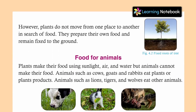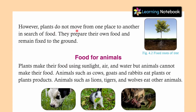However, plants do not move from one place to another in search of food. They prepare their own food and remain fixed to the ground. जो plants होते हैं वो एक जगह से दूसरी जगह move नहीं करते हैं. Leaves make food for the plant — plants अपना खाना खुद बनाते हैं. और उनकी roots उनको ground में fix रखती हैं. तो हमने देखा कि animals में movement होती है, but plants एक जगह से दूसरी जगह move नहीं करते.